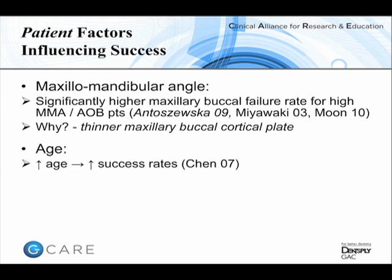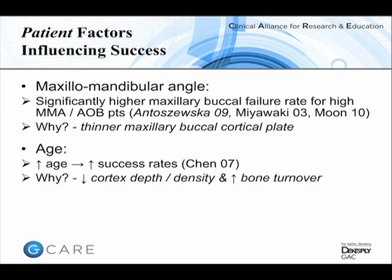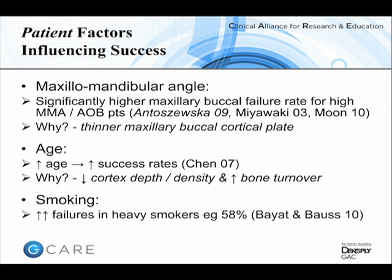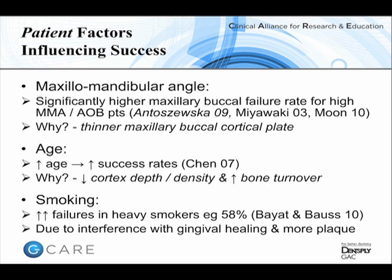Age is relevant because generally the older the patient, the higher the success rate, particularly in the transition from a teenage growing patient to an adult. Teenagers have a high bone turnover rate and thinner, less dense cortex than adults. Smoking is a relative contraindication: heavy smokers have a massively increased failure rate — in one study from Germany, the failure rate was 58% in heavy smokers compared to approximately 15% in non-smokers, likely due to interference with gingival healing and higher plaque retention.